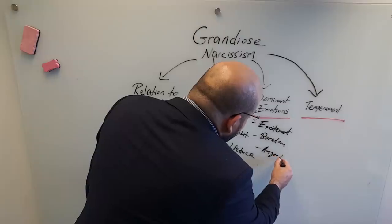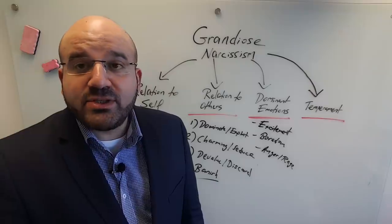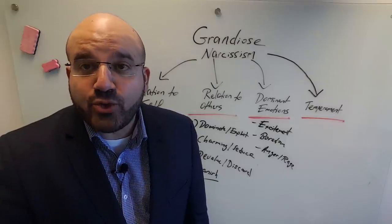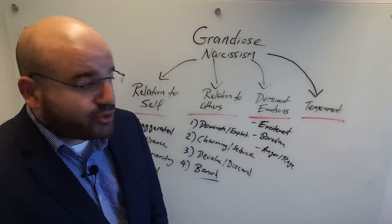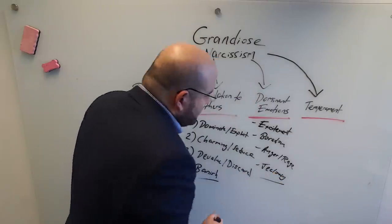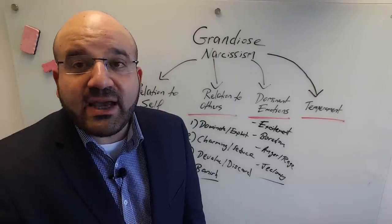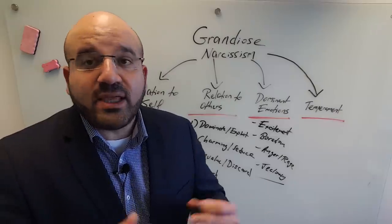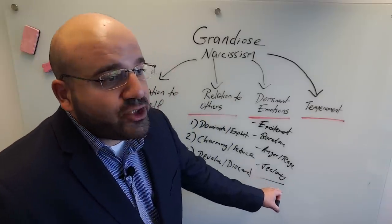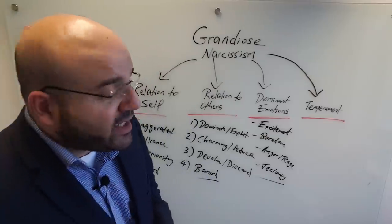Of course, anger and rage are dominant emotions when sources of narcissistic supply are not being provided, when their attempts to exploit others aren't successful, when their entitlement isn't being appreciated, or when their demands are not being met. Some jealousy and envy are present as well, though grandiose narcissists can very quickly devalue the source of that jealousy or envy, convince themselves they're better, and move on — unless that individual has made a point to belittle or humiliate them, which is something you definitely do not want to do with these character-disturbed individuals.